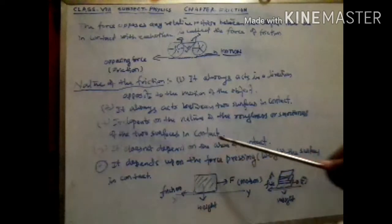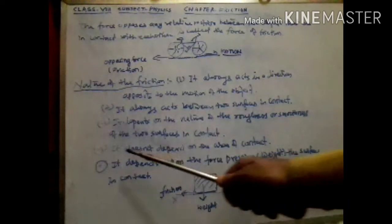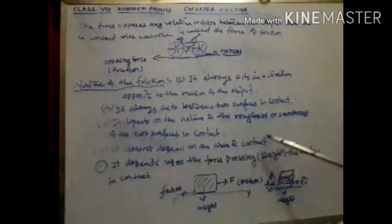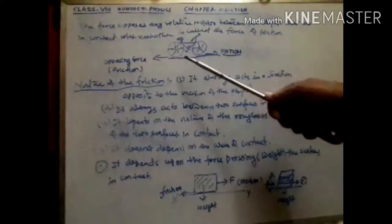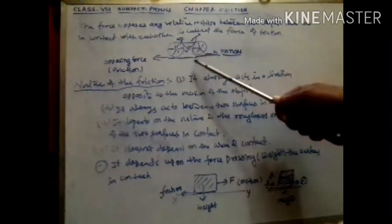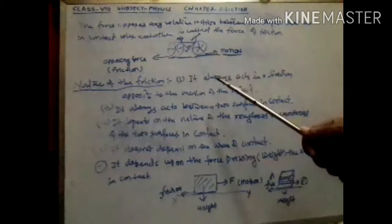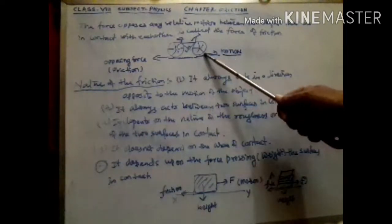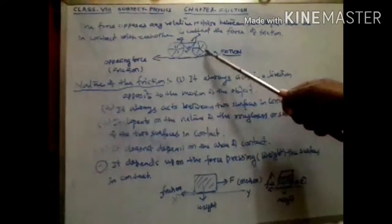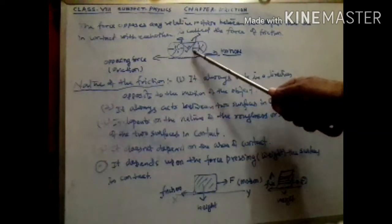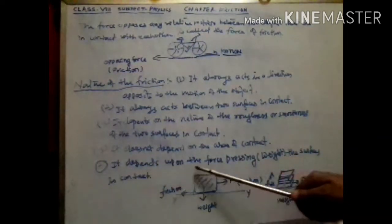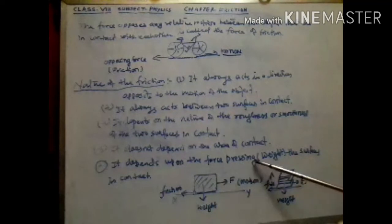Point four: friction does not depend on the area of contact. It doesn't matter what the area of contact between the two surfaces is. It only depends on the nature of the surface, not the area of the surface.